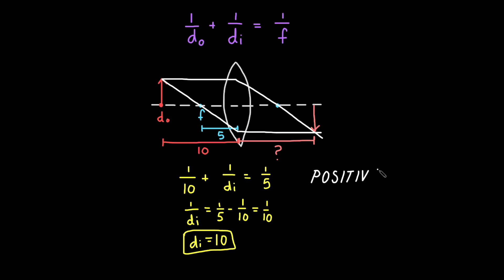It is positive, which means that the image is on the opposite side of the lens as the object. And negative image distance indicates that the image is on the same side of the lens as the object.